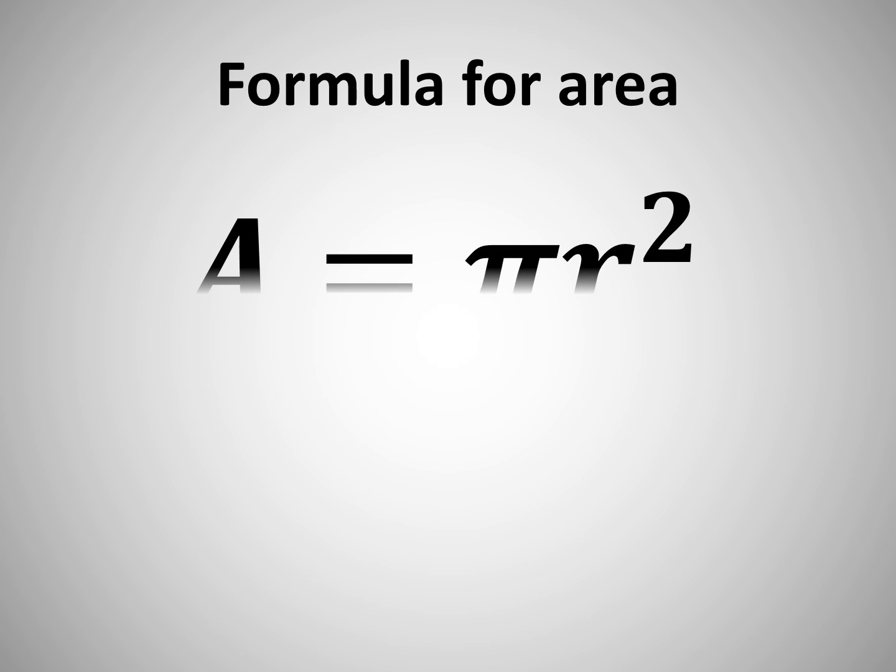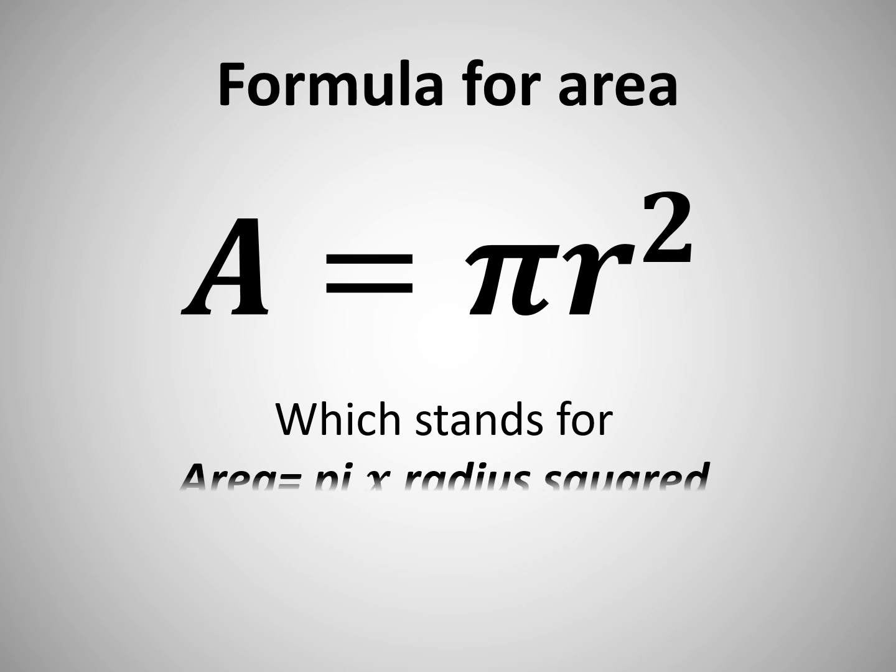Formula for area: A equals πr², which stands for area equals pi times radius squared. So once again, we're going to remember pies.